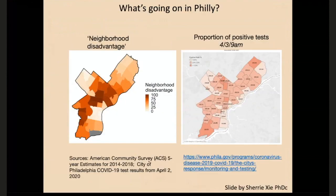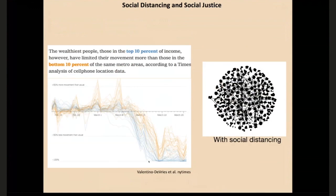I was asked to talk about Philadelphia. We now have published test results at a zip code level across the city. I've been watching these over the past couple of days, and I'm seeing the infection at higher rates in more disadvantaged areas of the city. Part of the reason might be that we're not equally able to social distance. The wealthier were able to social distance about three days earlier than the poorest 10% of the population, and they're able to social distance much more effectively. Even a small delay in social distancing can have a big effect on the epidemic.